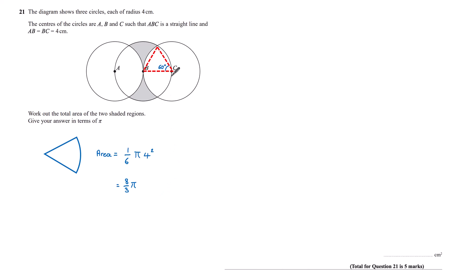Now I have the area of this sector of the circle. It would be useful if I had the area of the triangle. And so to find the area of this triangle, I'm going to use the sine equation, half A B sine C. And so that's half of four times four times sine sixty, which gives me a value of four root three for the area of this triangle.